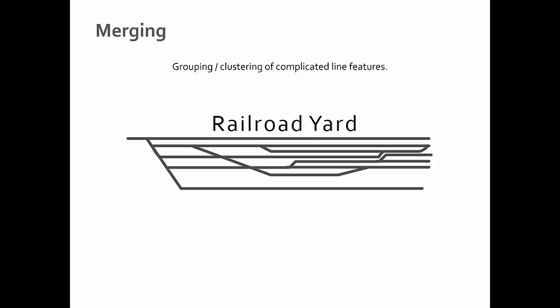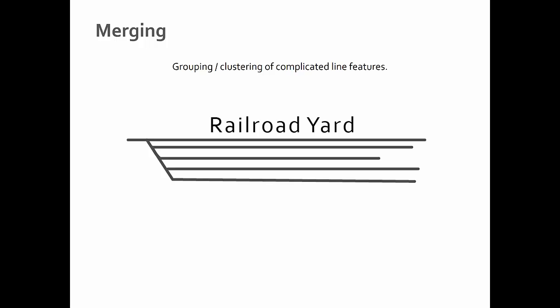Merging is the grouping or clustering of complicated line features. Let's pretend this is a map of a railroad yard. If you're creating a map specifically of a railroad yard, that level of detail is probably very useful. But if the railroad yard is just on your map — maybe a reference map for tourists — it might be easier and less distracting if you generalized it. Merging groups complicated line features into simpler ones so they don't distract or dominate the visual hierarchy.